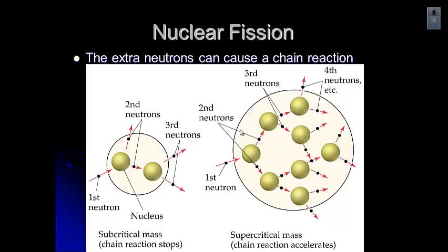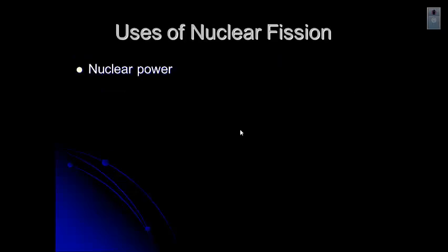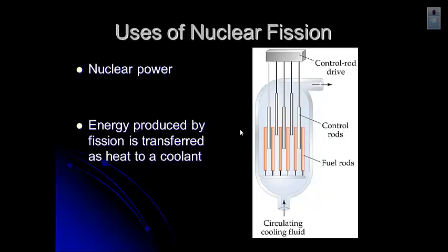We can use subcritical mass for nuclear power. Supercritical mass has some other uses. With nuclear power, we use uranium or plutonium fuel. Energy is produced by being transferred as heat to a coolant. This is what it looks like inside of a nuclear reactor. You have these fuel rods, uranium or plutonium, and the reaction occurring with neutrons moving between these fuel rods, keeping that chain reaction going.